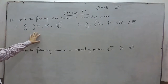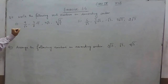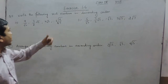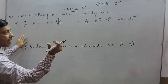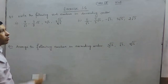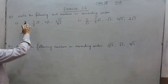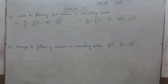Hello everyone. Exercise 1.4, question number 11. This is the same question as question number 10, except here we have to write the numbers in descending order. We can either take approximate values of √2, √3, or √5, or convert them into under-root form as shown in the last case.